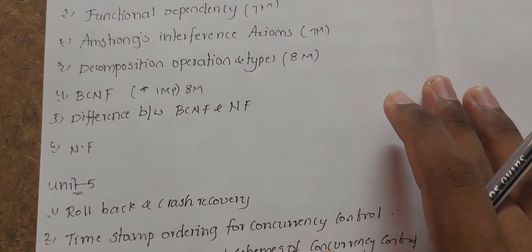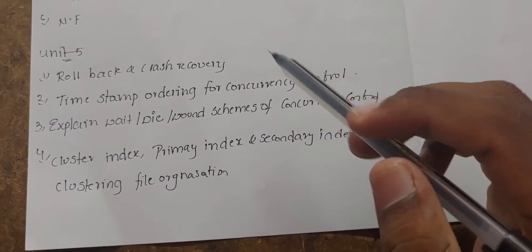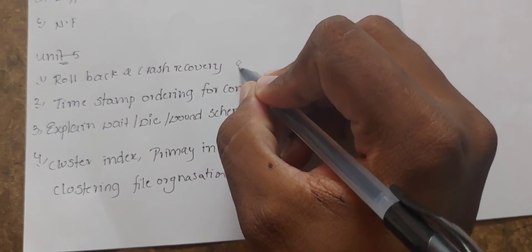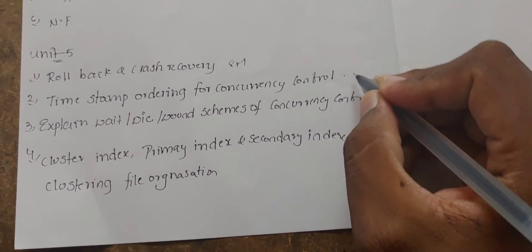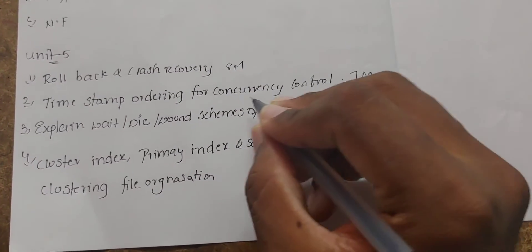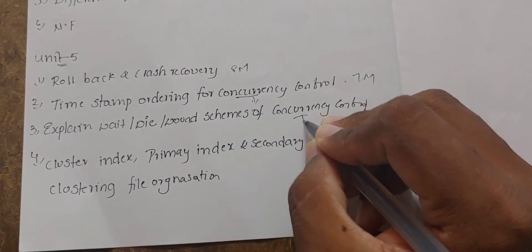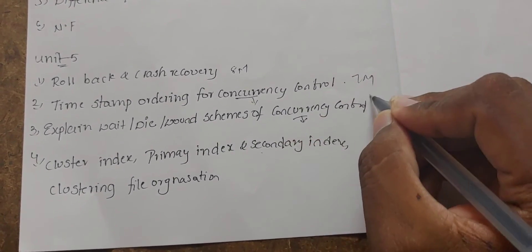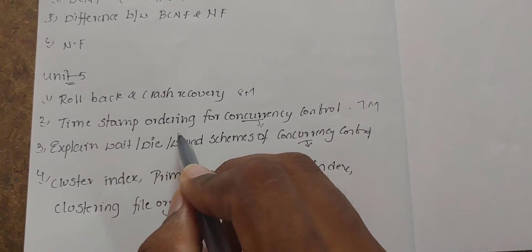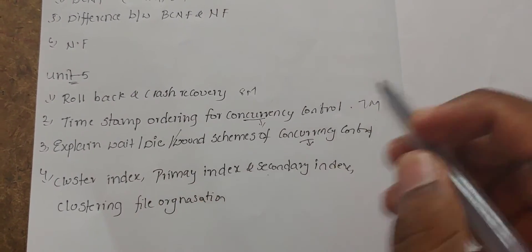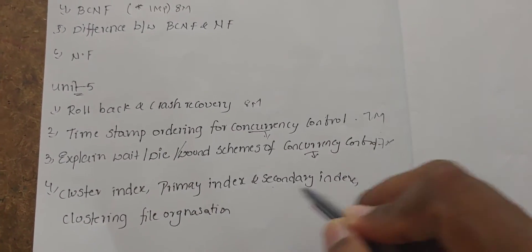Unit 5 - important topic. Rollback crash recovery - eight marks. Time stamp ordering for concurrency control - it's one mark. At the end, three types of questions stay. So prepare these three topics. That's what I recommend. That's what makes you want the main few questions.